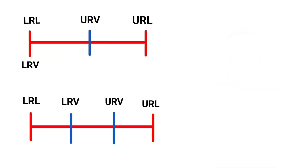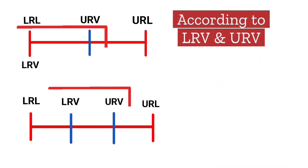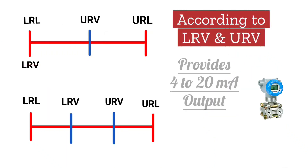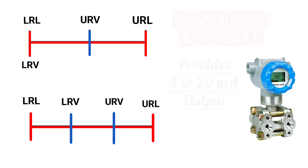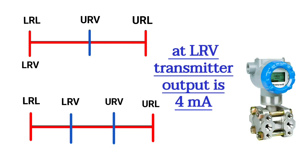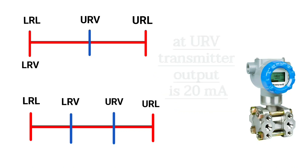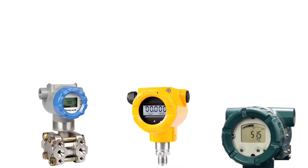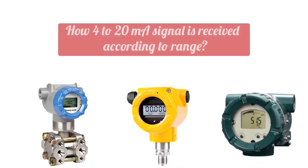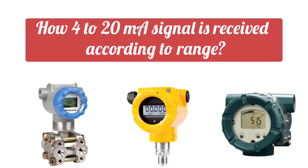According to LRV and URV, the transmitter provides 4 to 20 milliampere output. At LRV, the output of the transmitter is 4 milliampere, and at URV, the output of the transmitter is 20 milliampere. Let's discuss how the 4 to 20 milliampere signal is received according to the range.